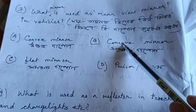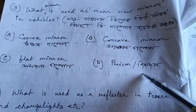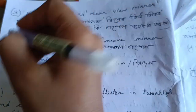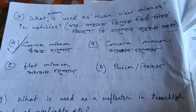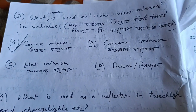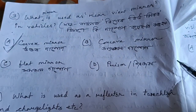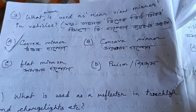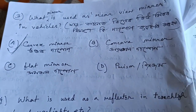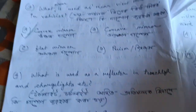Flat mirror means 'somatolodarpun', concave means 'obotol darpun', using a prism. This is the right answer. Convex mirror means 'uttol darpun', used in vehicles.